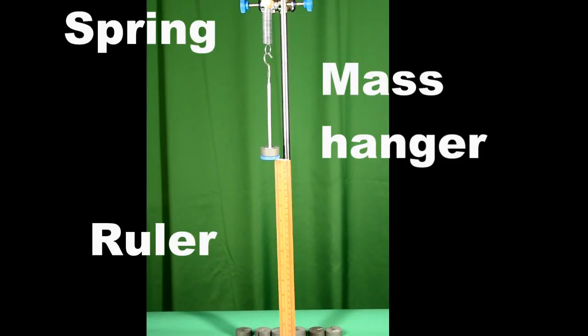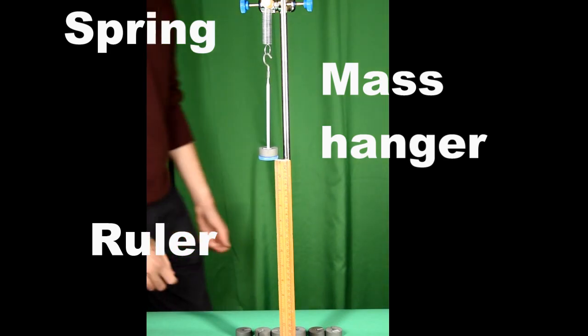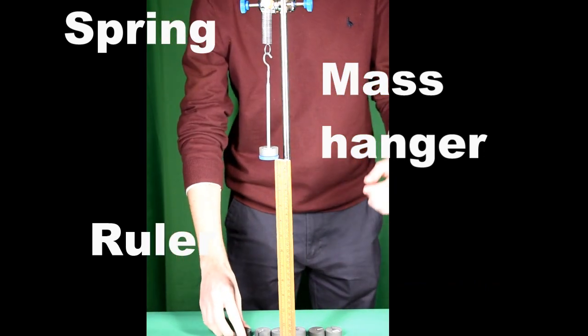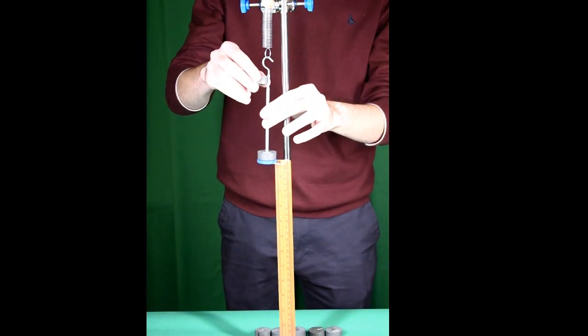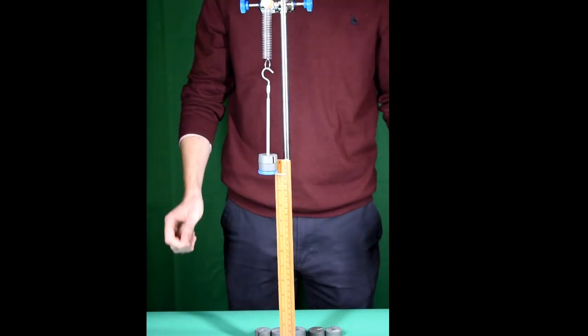The spring is suspended from a clamp stand with a mass hanger hanging from the bottom. A 50 gram mass has already been added. The hanger is set up at zero, so 50 grams is now added and the extension recorded.